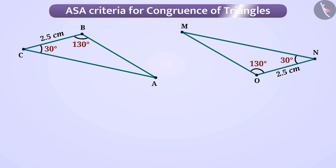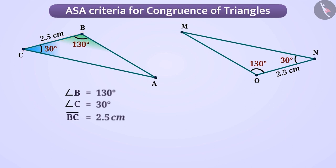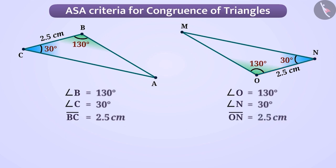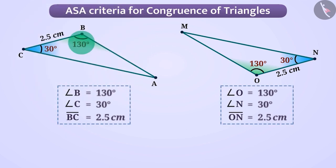Here we have two triangles. Triangle ABC has angle B equal to 130 degrees, angle C equal to 30 degrees, and the length of the included side BC equal to 2.5 cm. Similarly, in triangle MNO, angle O is equal to 130 degrees, angle N is equal to 30 degrees, and the length of the included side ON is equal to 2.5 cm. Since the two angles, angle B and angle C of triangle ABC, and the included side BC are equal to the two corresponding angles, angle O and angle N, and the included side ON of triangle MNO,